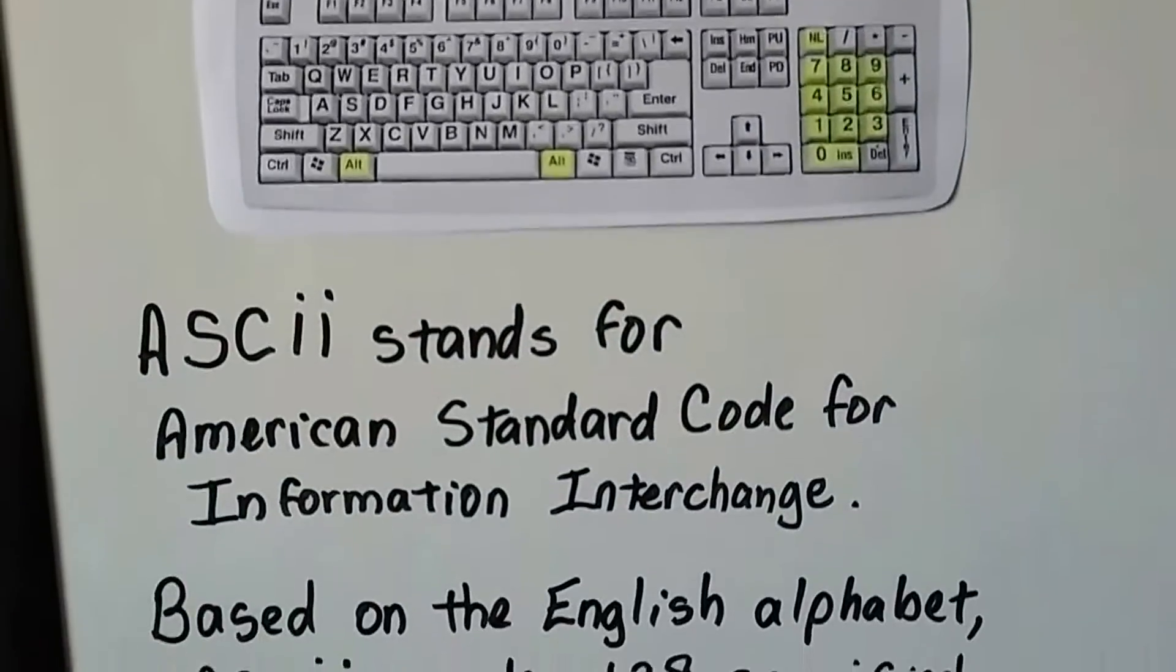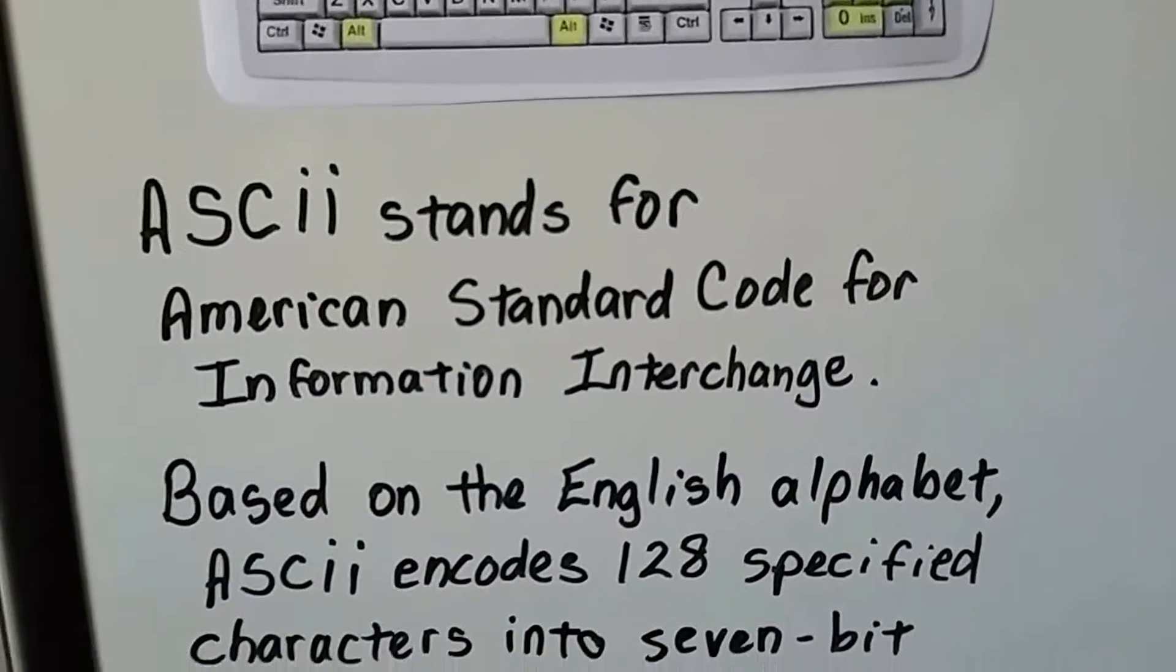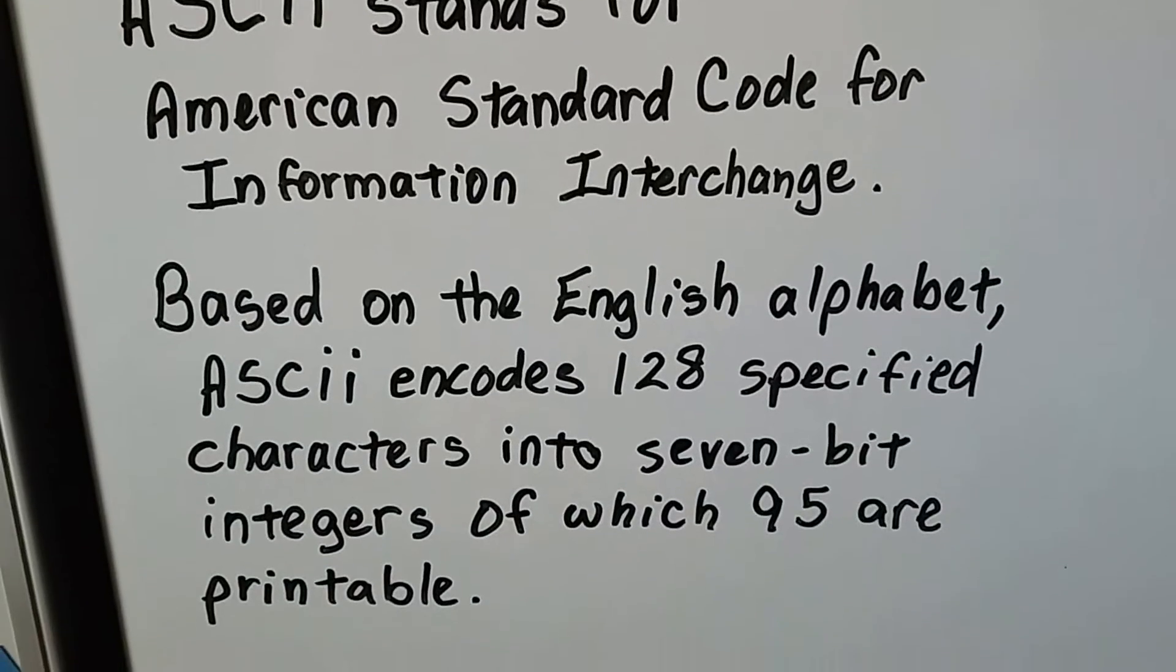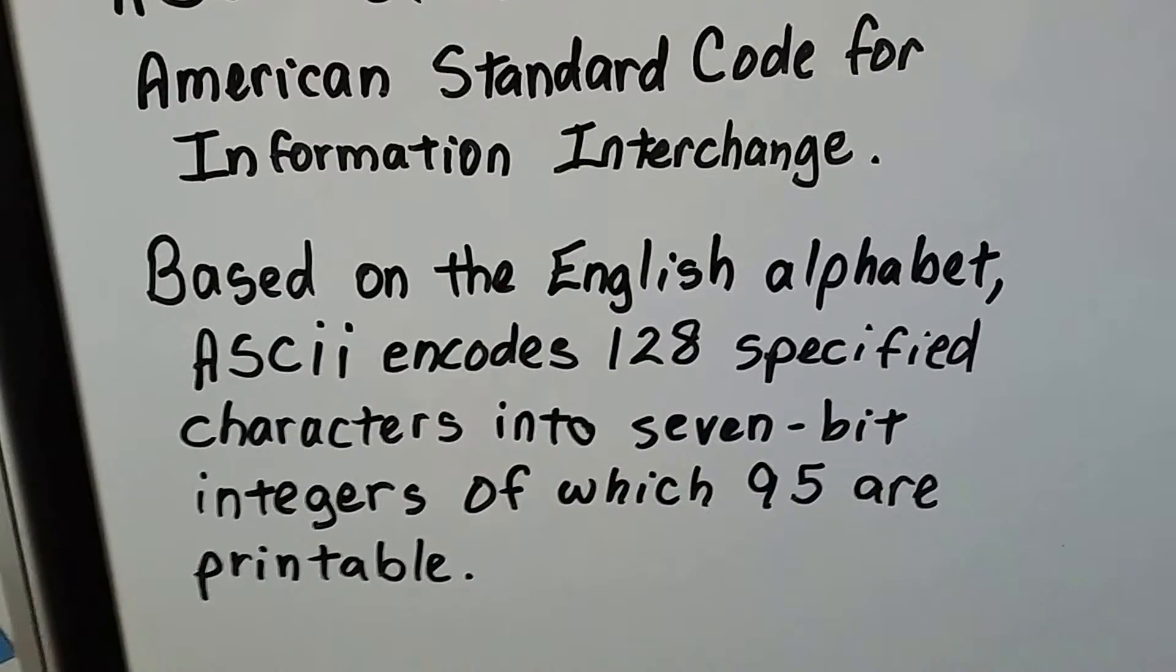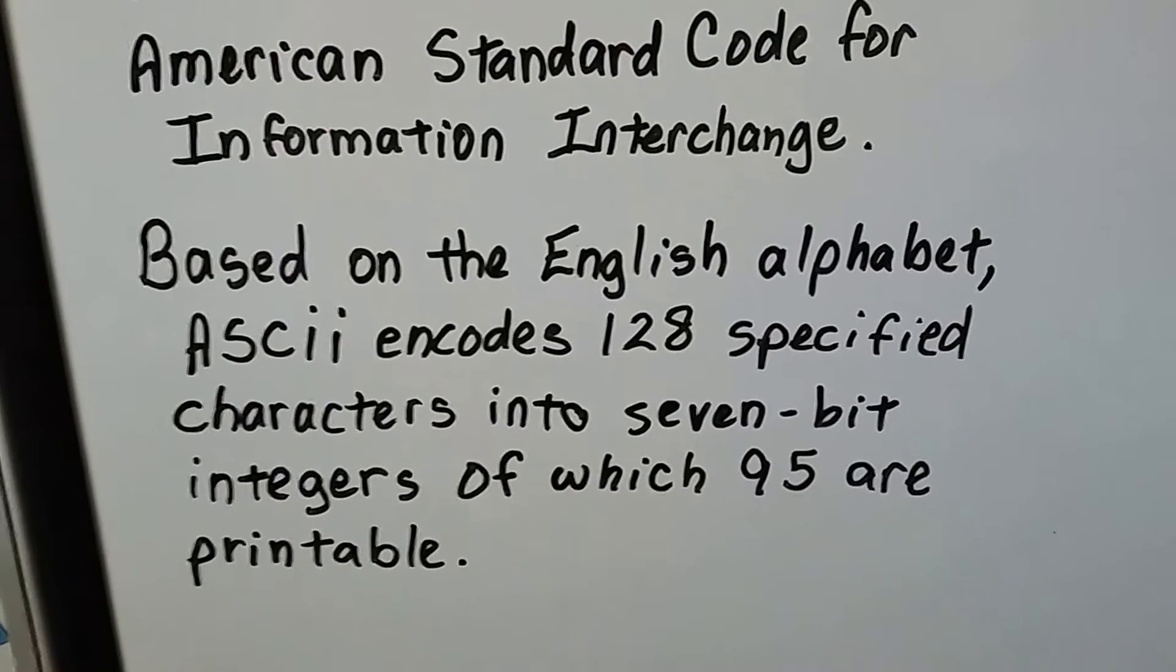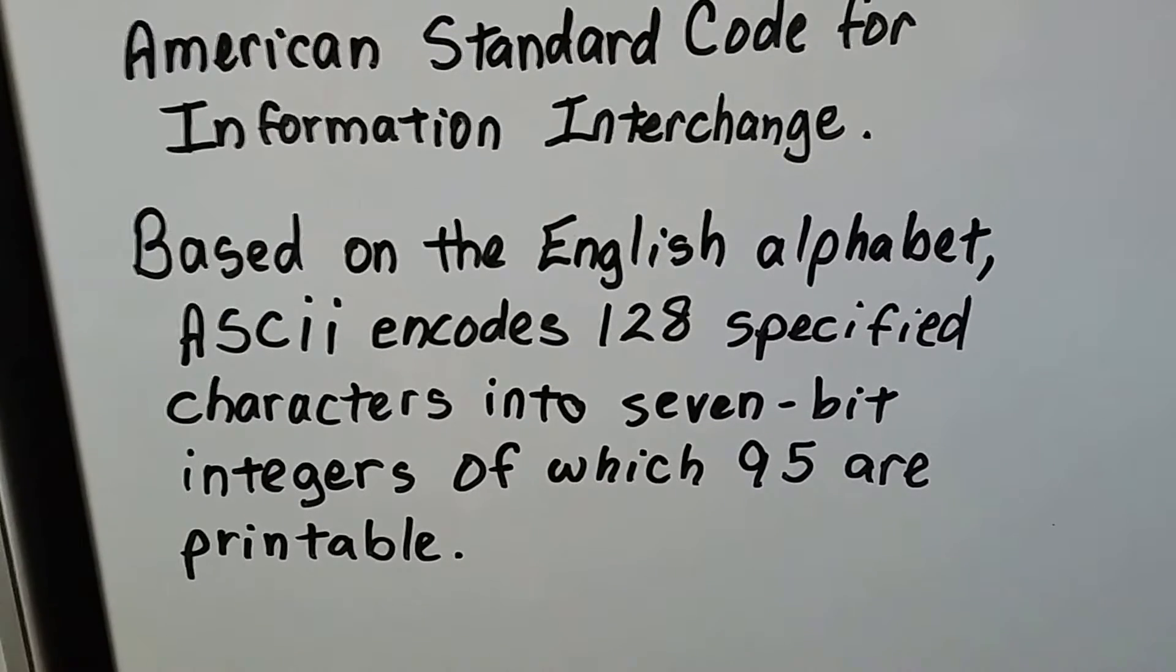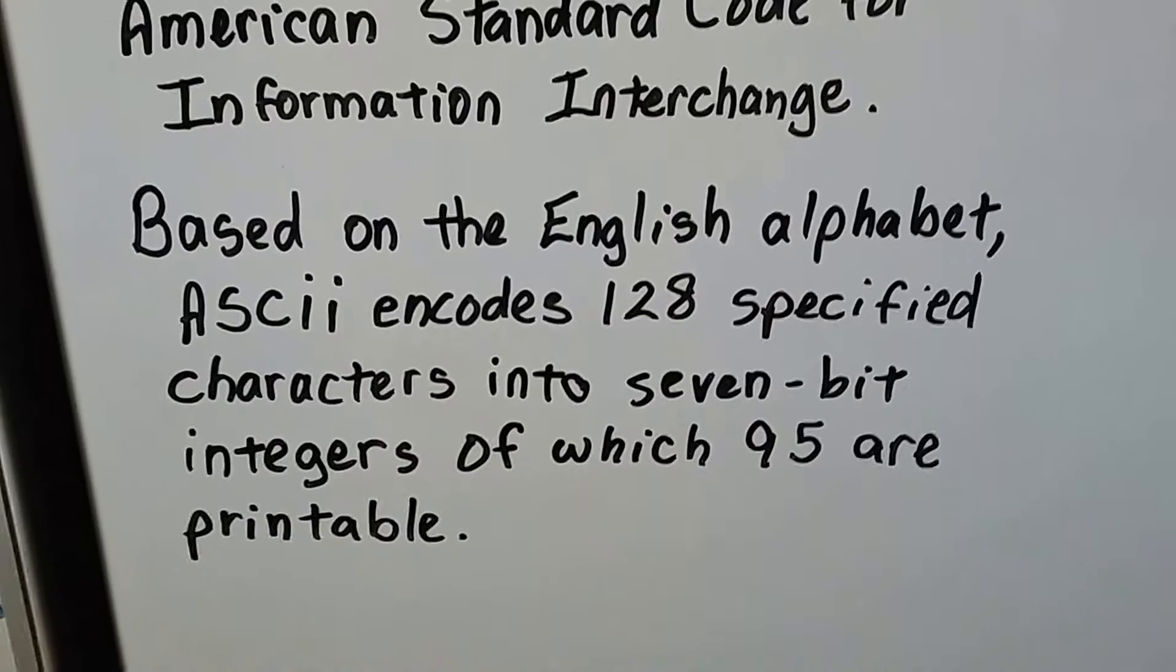ASCII stands for American Standard Code for Information Interchange. It's based on the English alphabet. ASCII encodes 128 specified characters into 7-bit integers of which 95 are printable.